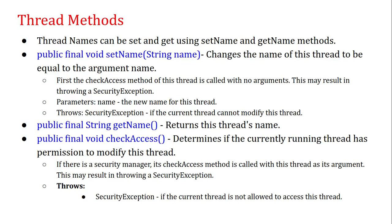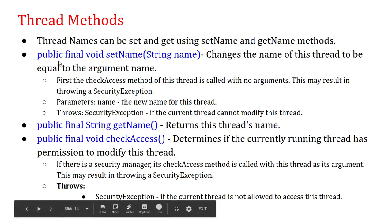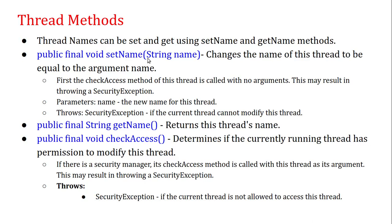We want to study thread methods. Thread names can be set and retrieved using setName and getName methods. The syntax is: public final void setName(String name). It changes the name of this thread to equal the argument name. First, the checkAccess method is called with no arguments, which may result in throwing a SecurityException if the current thread cannot modify this thread.